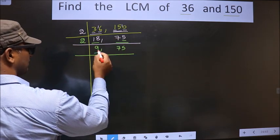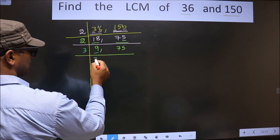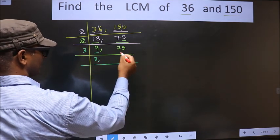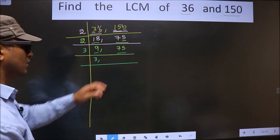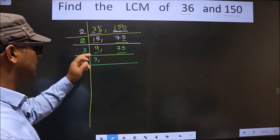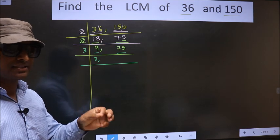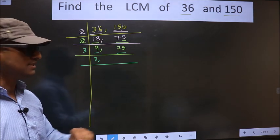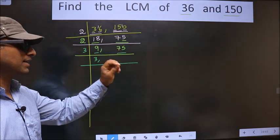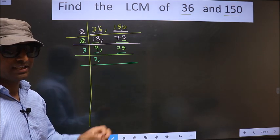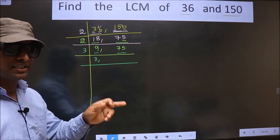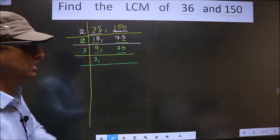Now here we have 9. 9 is 3 times 3 equals 9. The other number is 75. To check whether this is divisible by 3 or not, we should add the digits. That is 7 plus 5, we get 12. Is 12 divisible by 3? Yes. So this number is also divisible by 3.